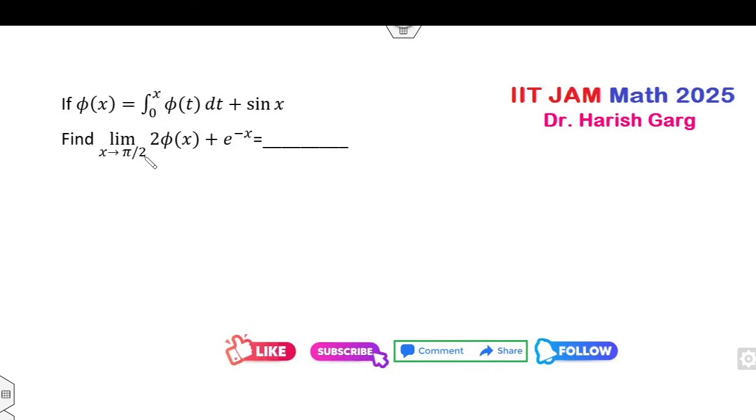We need to find limit x approaches π/2. The problem is directly e to the power minus π/2. Your target is to find φ(x). Now clearly, if you differentiate this equation number 1, what will happen? This is φ'(x) which is φ(x) + cos x. Or you can say φ' - φ = cos x.